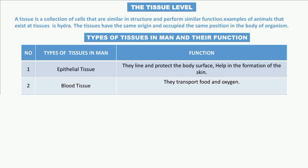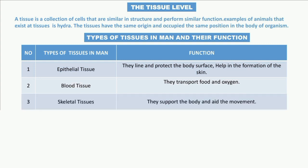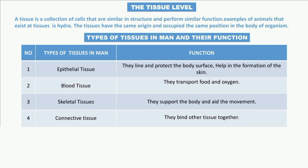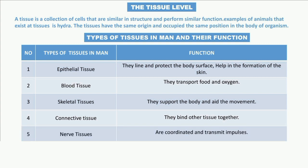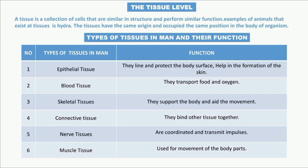Types of tissue in humans and their functions: epithelial tissue lines and protects body surfaces such as skin. Blood tissue transports blood and oxygen. Skeletal tissue supports the body and aids movement. Connective tissue binds other tissues together. Nerve tissue coordinates and transmits impulses. Muscle tissue is used for movement of the body.